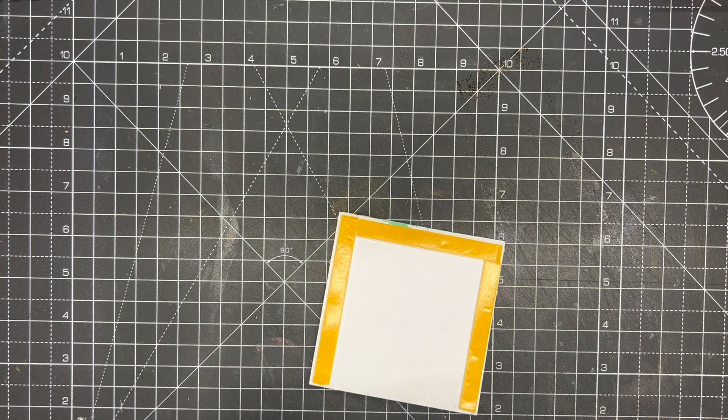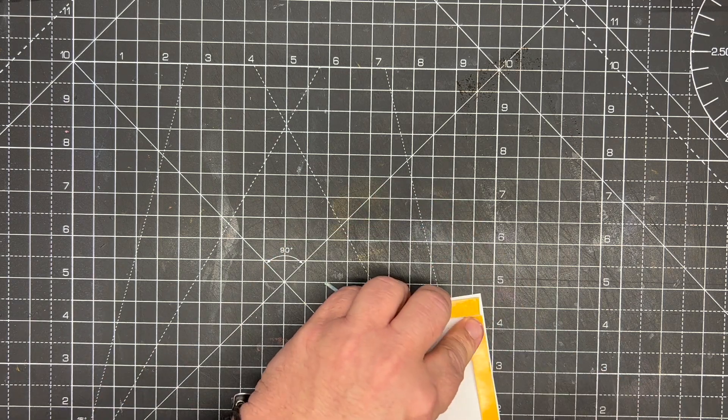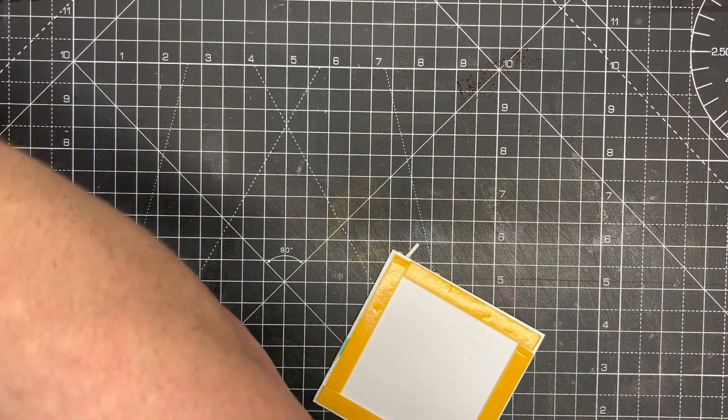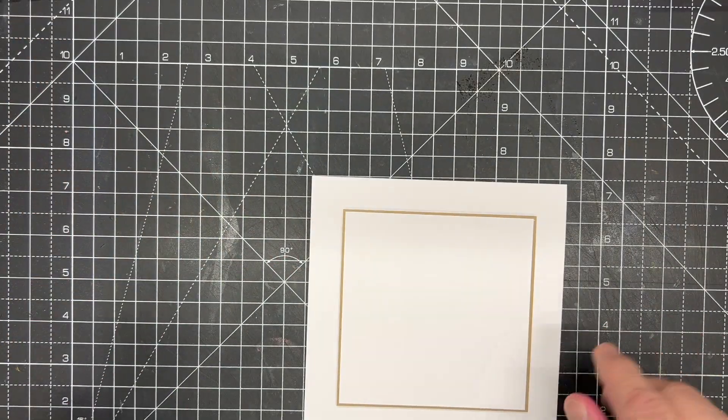And I'm going to pop this onto a card blank. I've used a five by five card blank, so nothing too big, and I've matted and layered this.